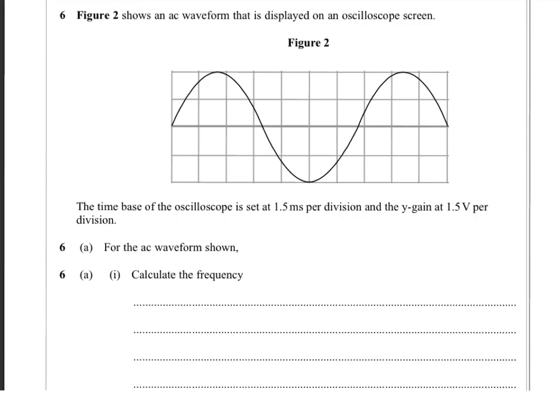Here's the second of our questions on oscilloscopes and AC. This one's a little bit harder because it's got the first part of the question about frequency and period and the time base. And that's often the part of the question that catches people out.